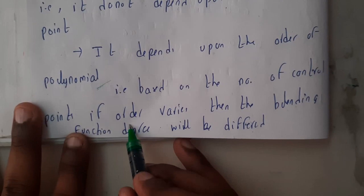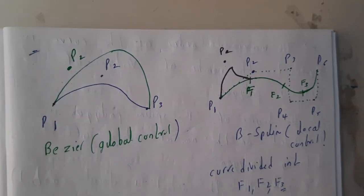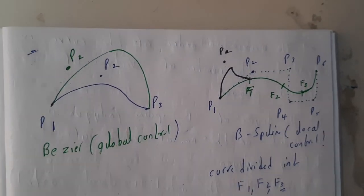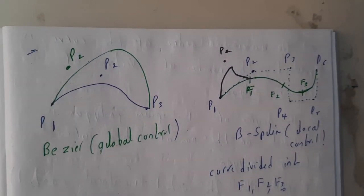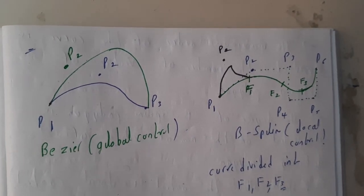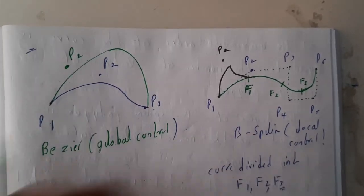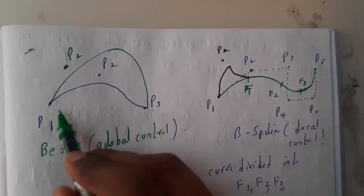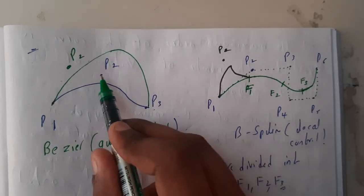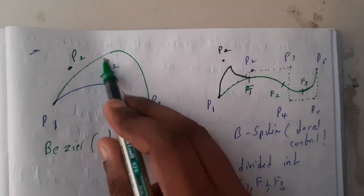Let us take an example with Bezier. You may ask how can I say that it is global control. Let us assume the initial points as P1, P2, and P3. The blue pen drawing is the original one. Once you move the point from P1 to P2, automatically the whole curve changes its shape. If you observe it, you can see the differences.